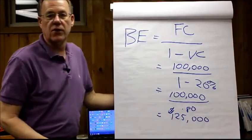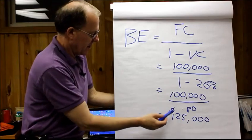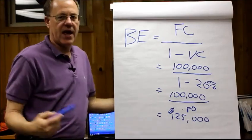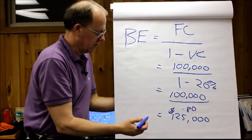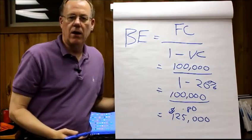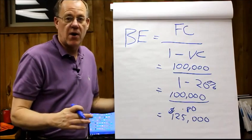Now for those of you who are quick at math, if you have an item that has an average dollar sale of let's say $1,000 then you're going to have to sell 125 just to break even.